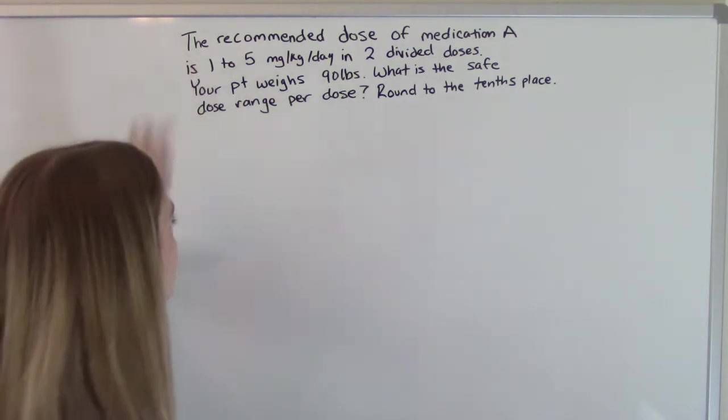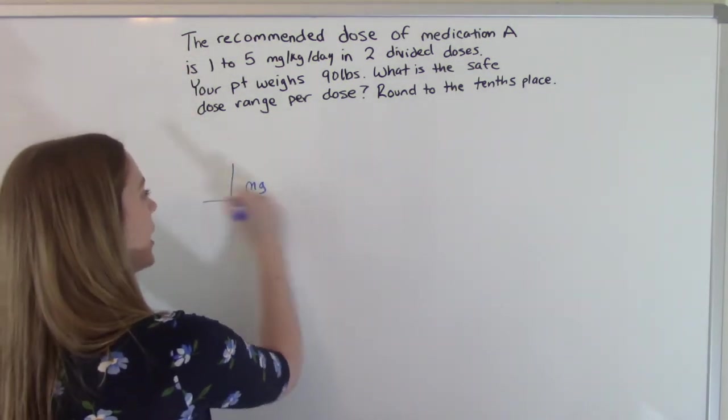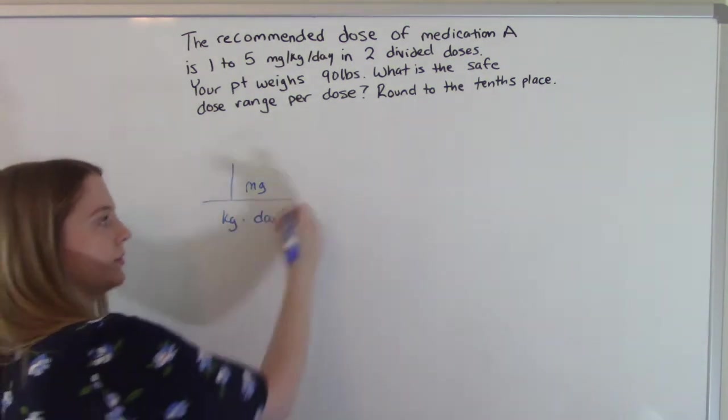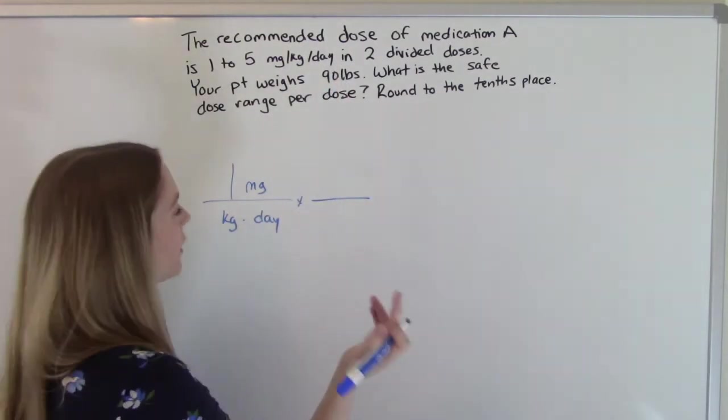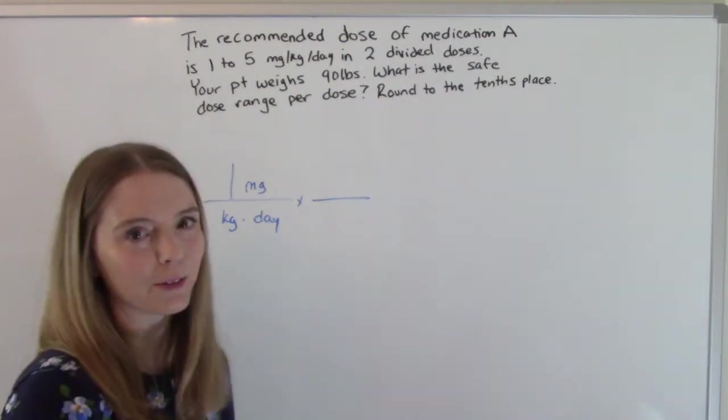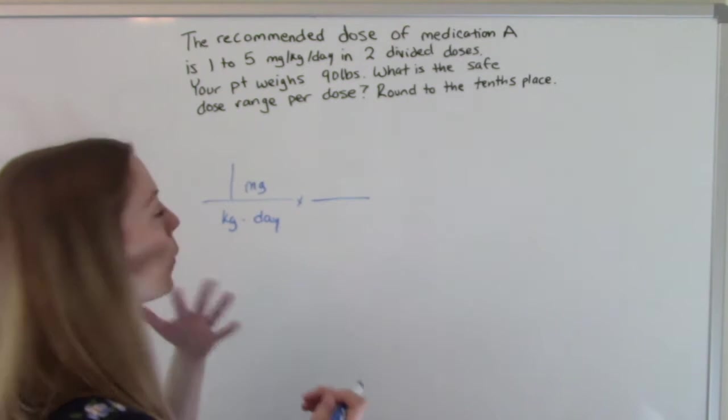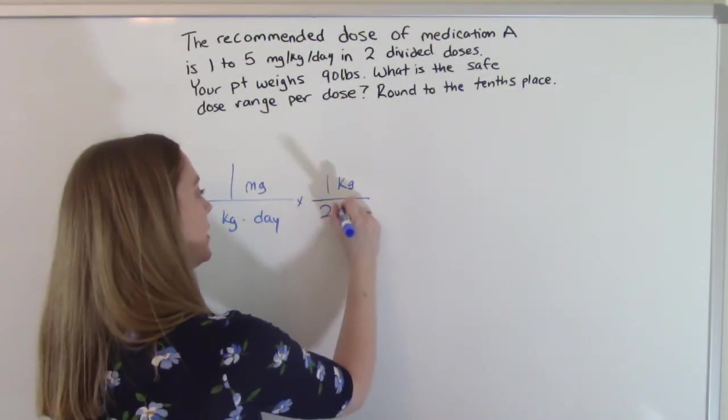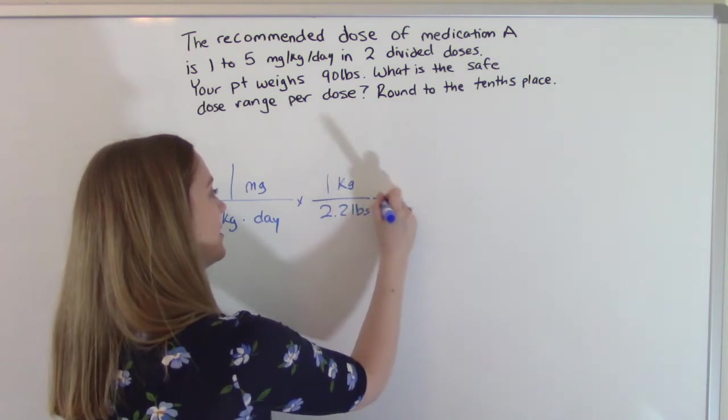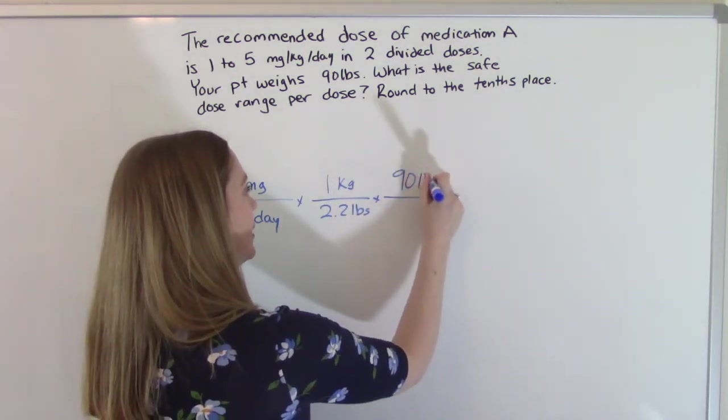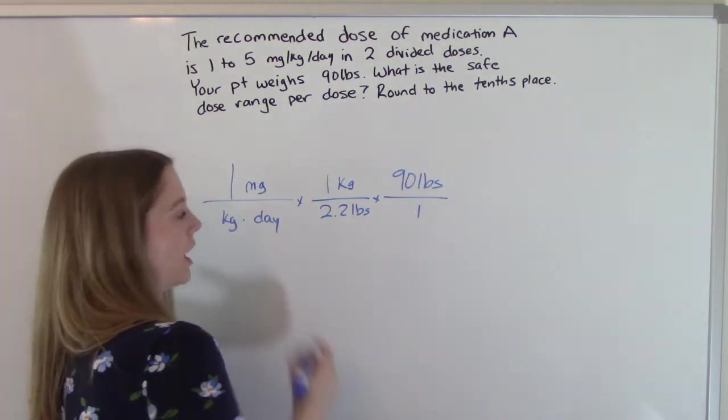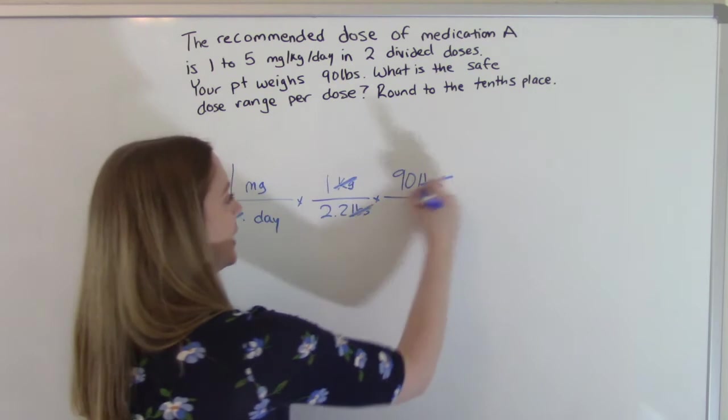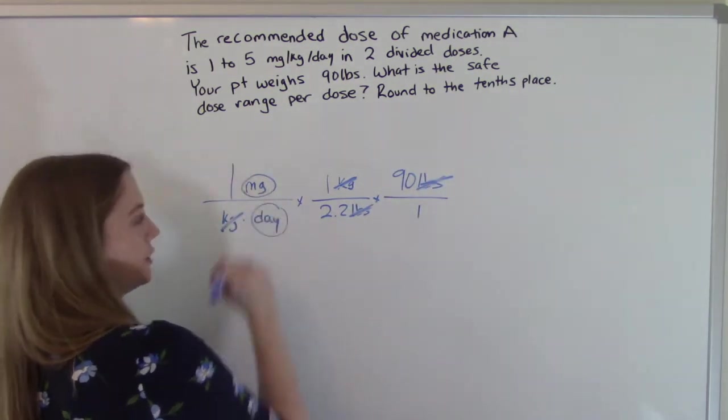So that's our 1. We have 1 milligram per kilogram per day. And then we have a child or a small adult that weighs 90 pounds. So what do we need to do? We need to convert our kilograms and our pounds. So 1 kilogram is 2.2 pounds and then our patient is 90 pounds. When we do this, the kilograms cancel out, the pounds will cancel out. This leaves us with milligrams over day.